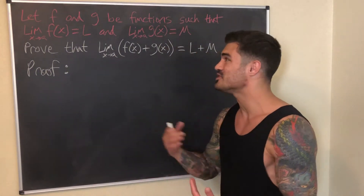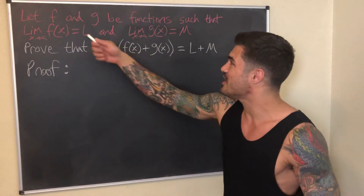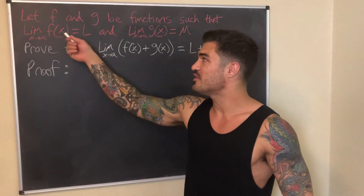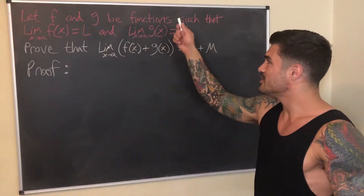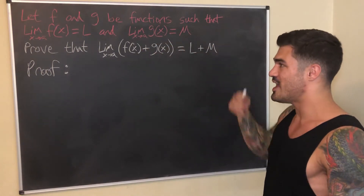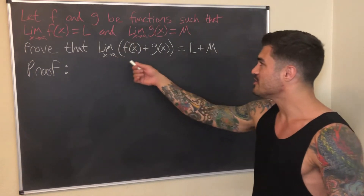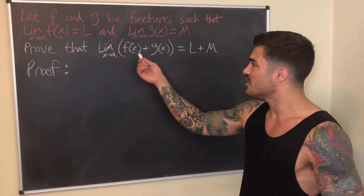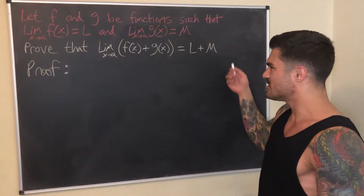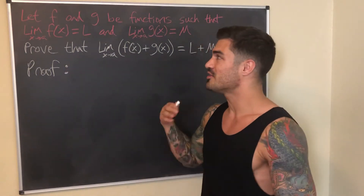Let's get into it. Let f and g be functions such that the limit of f(x) as x approaches a exists and equals L, and the limit of g(x) as x approaches a exists and equals M. Both these limits exist, and we're going to prove that the limit of the sum is the sum of the limits.